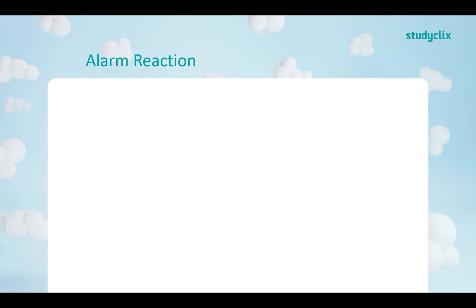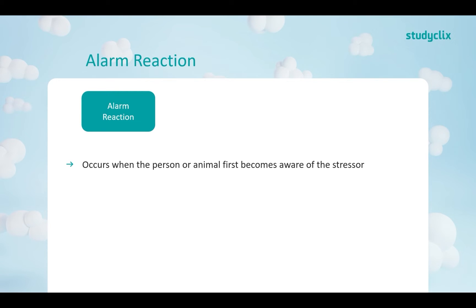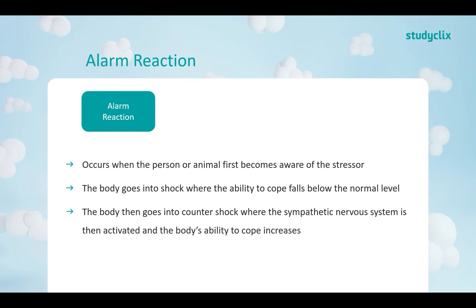Starting with alarm reaction, our first stage. This occurs when the person or animal first becomes aware of the stressor. The body goes into shock, where the ability to cope falls below the normal level, and then into counter-shock, where the sympathetic nervous system is activated and the body's ability to cope increases. For example, if you find out something really stressful or have a test coming up, your ability to cope falls below normal, then rises back up as the sympathetic nervous system activates, bringing up adrenaline and cortisol levels and ceasing digestion — increasing our ability to cope as part of counter-shock.